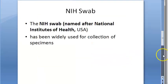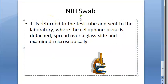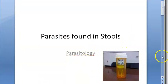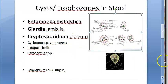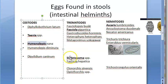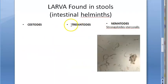Then you return it to the lab. In the lab, they will open the cellophane and examine it under the microscope. They look for any parasites present. You can see protozoans such as cysts and trophozoites like Entamoeba histolytica, Giardia lamblia, etc. You can also see the eggs of helminths like Taenia species, Hymenolepis, Fasciola, Schistosoma, Ascaris, and many more.